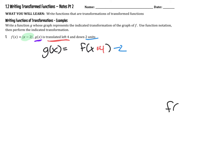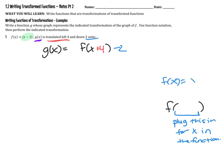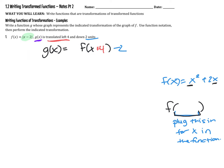Whatever is inside — whichever function we're looking at — whatever is inside here, we plug this in for x in the function. If it happened to be a function where there was more than one x, let's say our function was x squared plus 2x, then everywhere that there's an x we would plug in whatever it says to plug in. So in the case of this problem, everywhere that I see an x in my original function, I'm going to replace it with x plus 4.